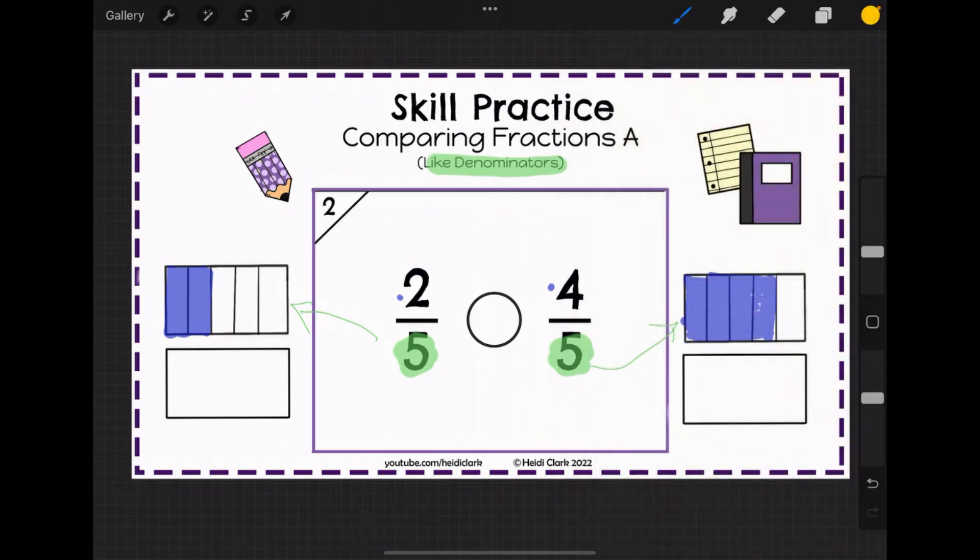When you are writing your less than, greater than symbols, so this one is greater than, that one is less than. I like to think about it as if it were an alligator with teeth or a Pac-Man. And that Pac-Man is going to eat the bigger fraction because it's hungry. So we're going to draw it with its mouth opening towards four-fifths because that is the bigger fraction.